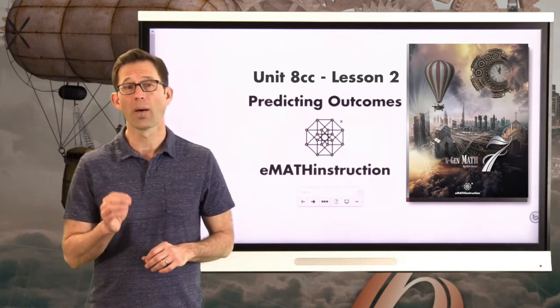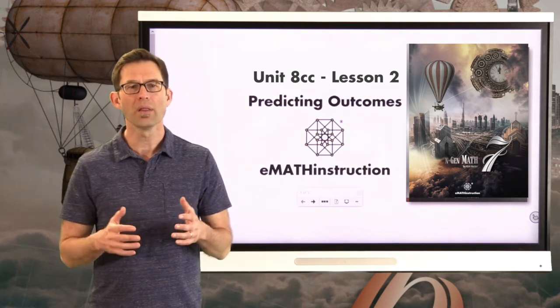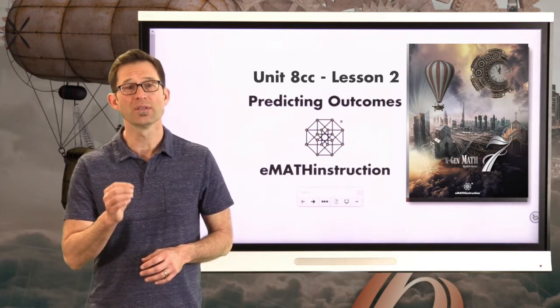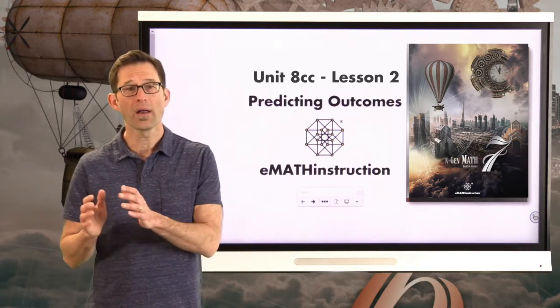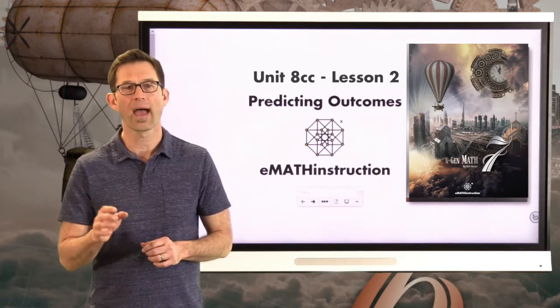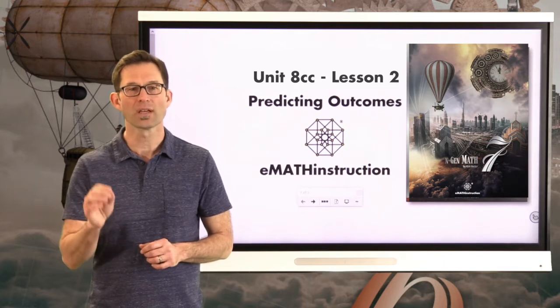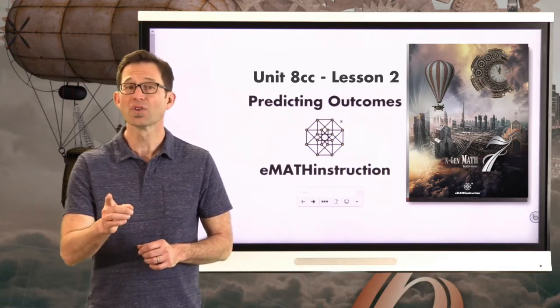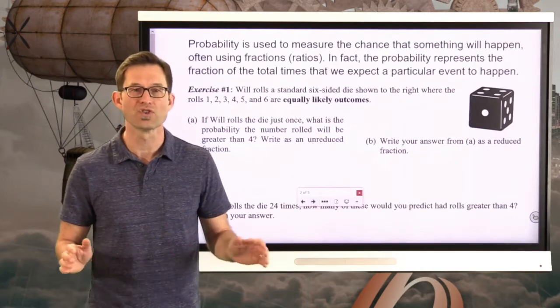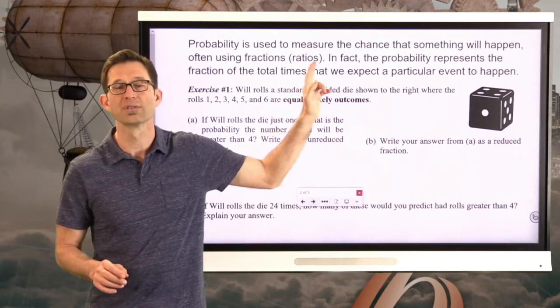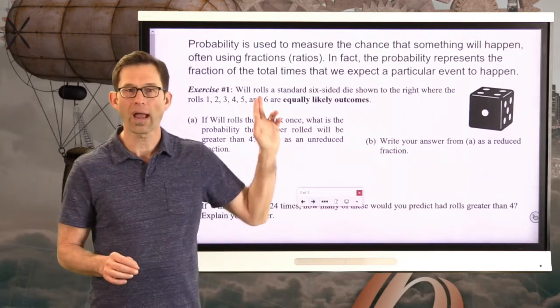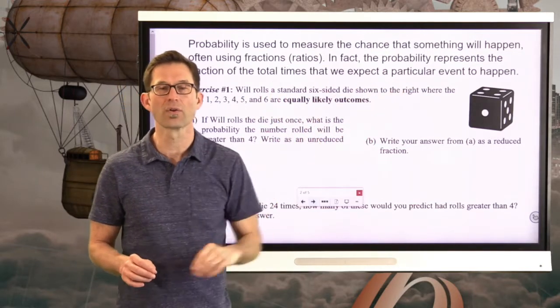This entire unit is about probability, our ability to measure the likelihood or chance that something is going to happen. We saw how to measure probability using ratios. We're now going to be using those ratios to try to predict how many times a particular thing happens. Let's jump into that. Probability is used to measure the chance that something will happen, often using fractions, i.e. ratios. In fact, the probability represents the fraction of the total times that we expect a particular event to happen.